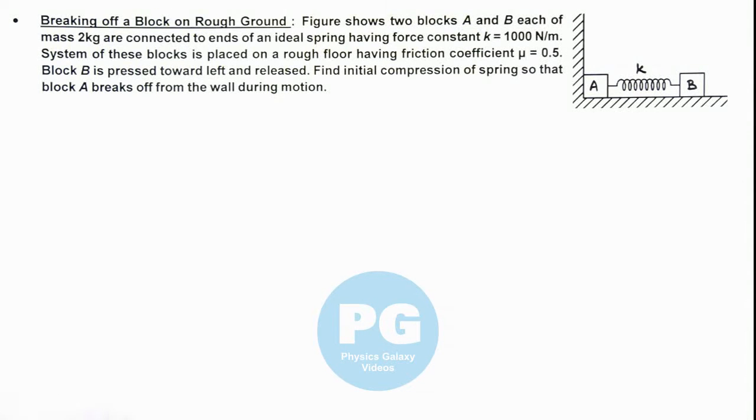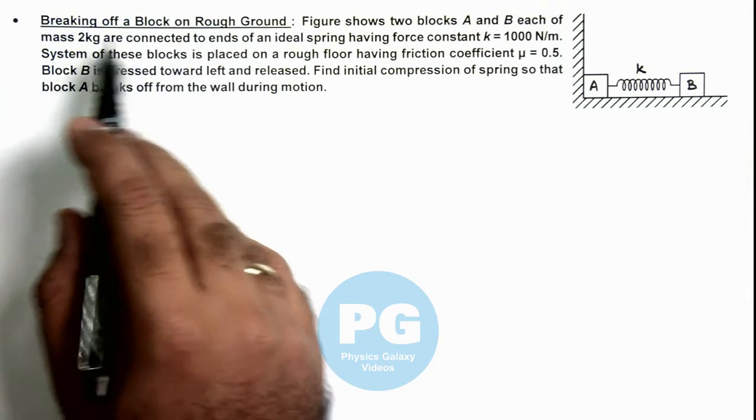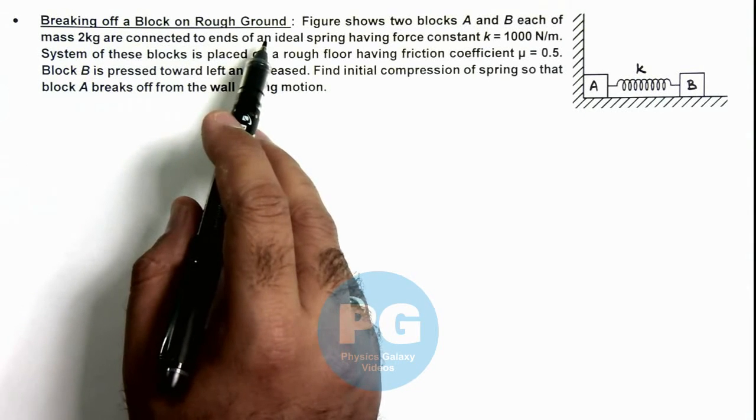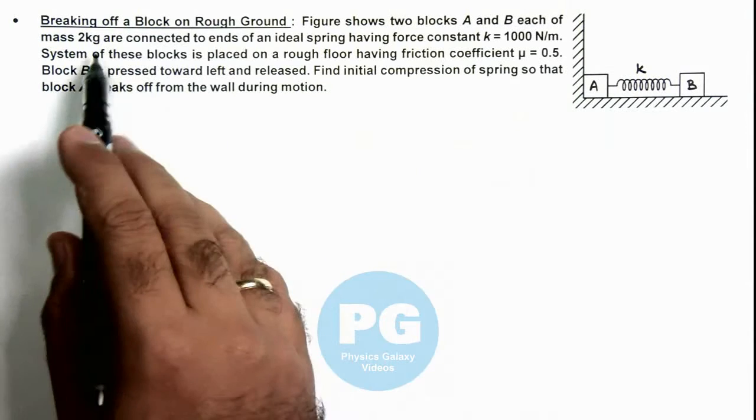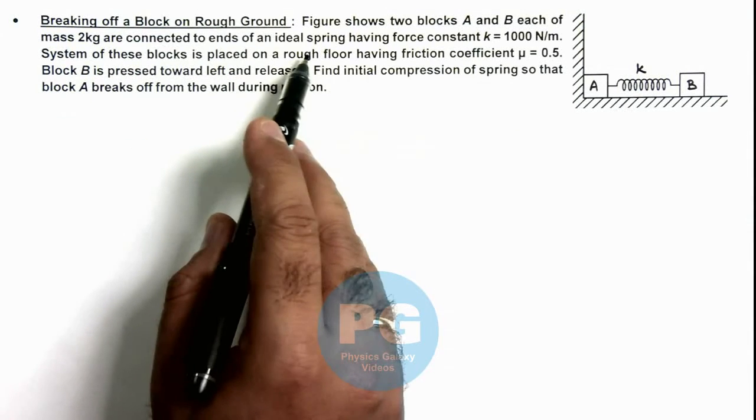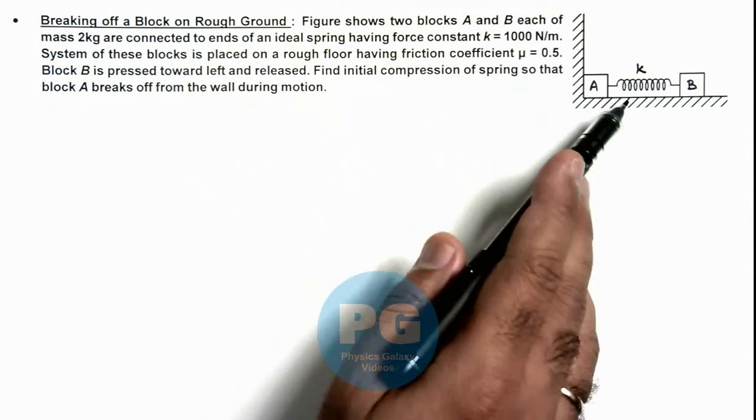In this illustration we'll study about breaking of a block on rough ground. Here we are given that two blocks A and B each of mass 2 kilograms are connected to ends of an ideal spring having force constant k.